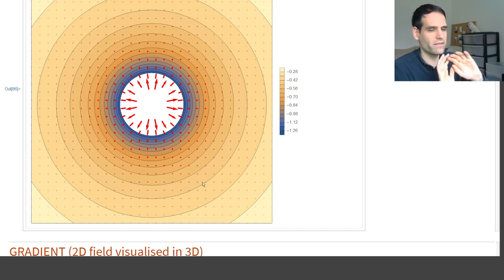You can see the gravitational field, or the gradient of the potential, which are these arrows pointing in the radial direction.